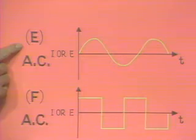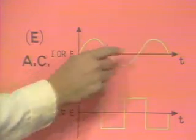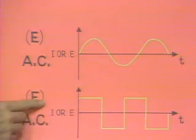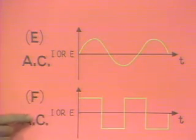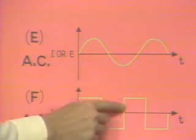Waveform E is an AC waveform because it changes polarity and amplitude. Waveform F is also an AC waveform because it, too, changes polarity and amplitude.